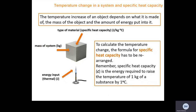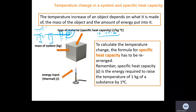The temperature increase of an object depends on what it is made of. For example, a metal bench in the sun will increase in temperature more than a wooden bench given the same energy input. The mass of the object also matters — a small cube will increase in temperature more than a large cube given the same energy. And the amount of energy input matters too — an object heated for 10 seconds will be much warmer than one heated for 1 second. To calculate temperature change, we use the specific heat capacity formula.